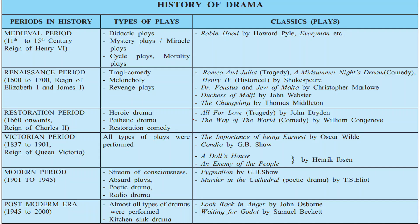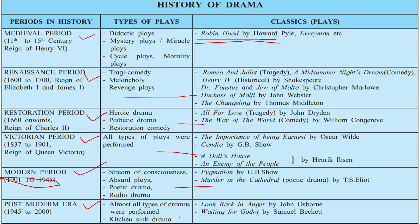Now let's look at the table of periods in the history of drama. The periods are: Medieval period, Renaissance period, Restoration period, Victorian period, Modern period, and Post-modern era. Types of plays in the medieval period include didactic plays, mystery plays, miracle plays, cycle plays, and morality plays. This table is for your information only.